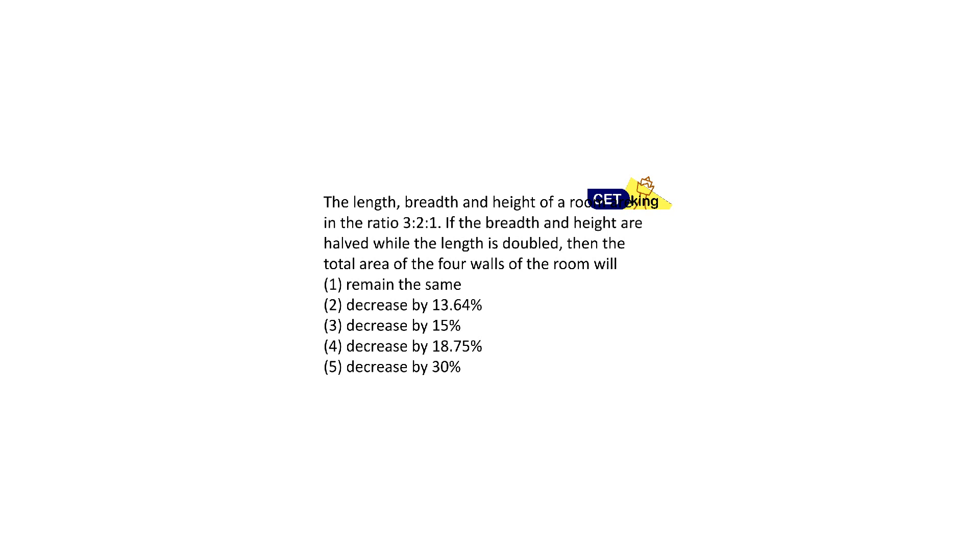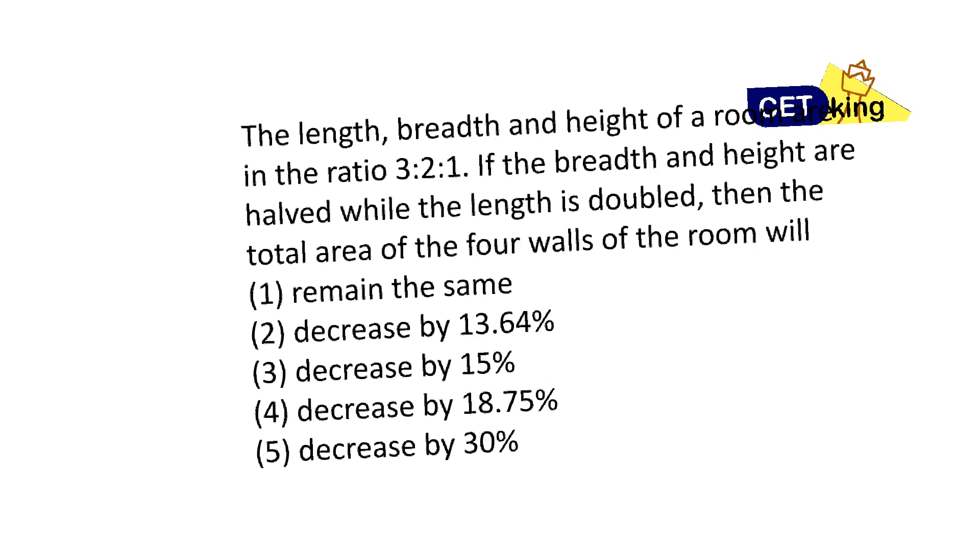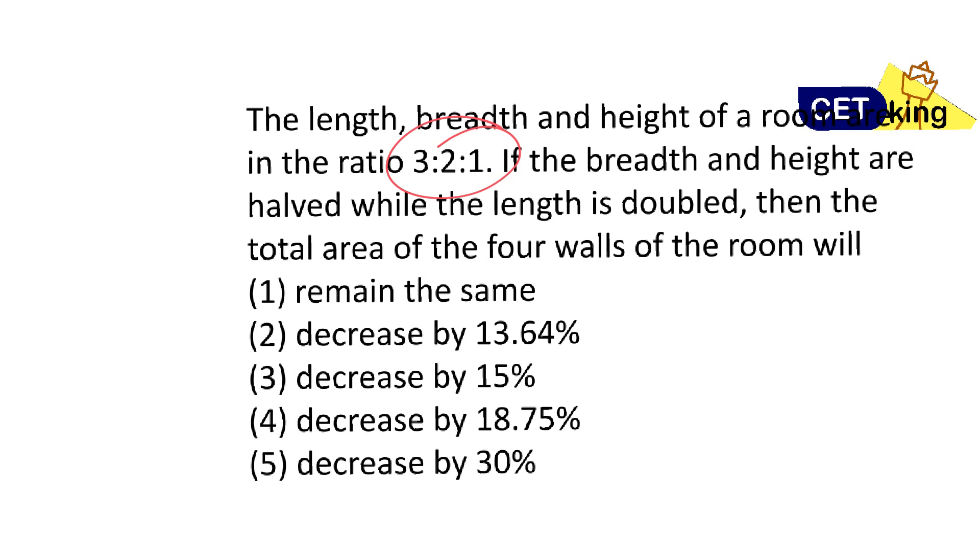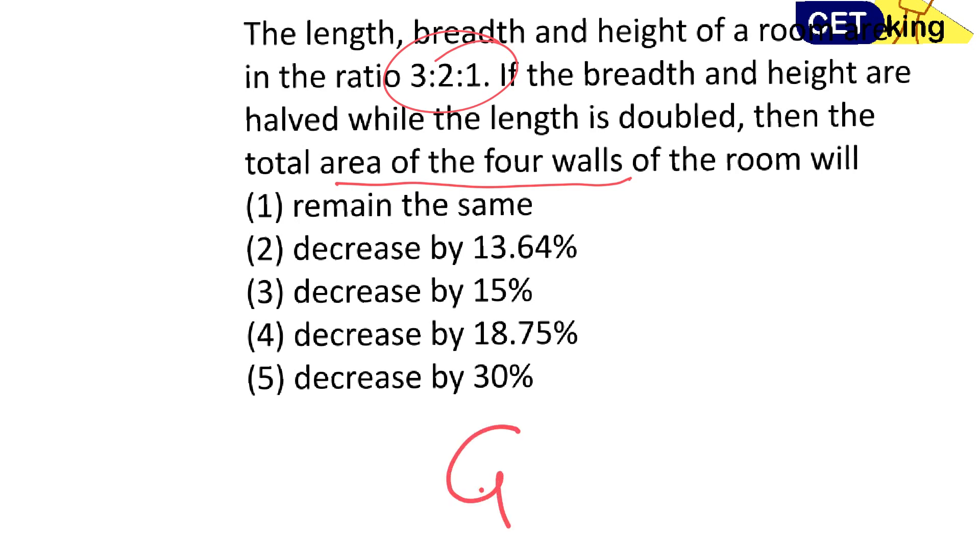The length, breadth, and height of a room are in the ratio 3:2:1. If the breadth and height are halved while the length is doubled, find the change in the area. This question here is a cakewalk, a bloody cakewalk question which was in CAT 2006. All I need is half means 0.5, double means become double, and I need the area of the 4 walls. If you know the area of the 4 walls, you are done.